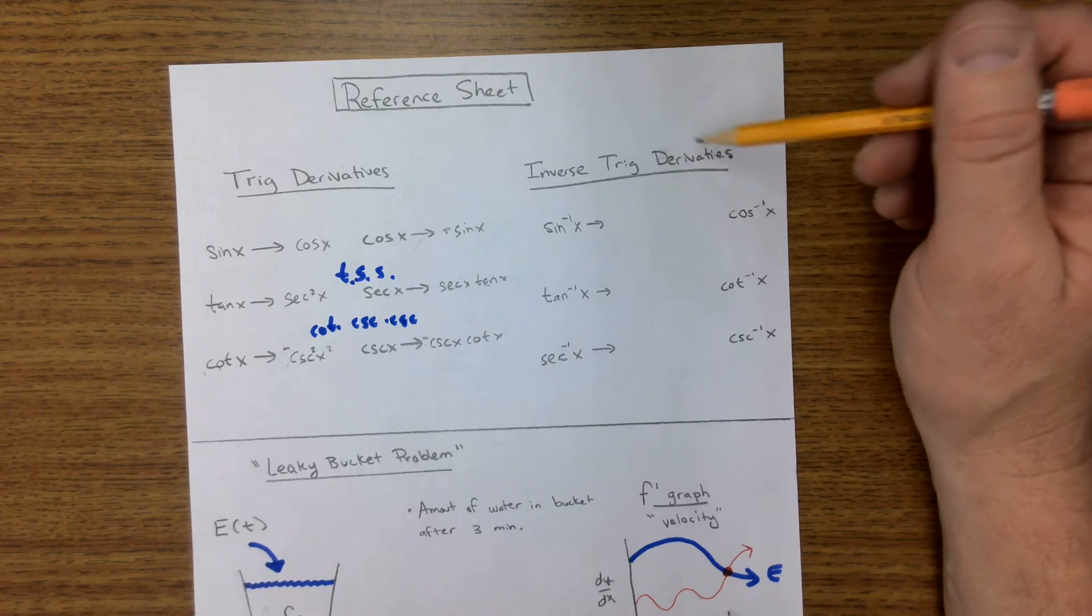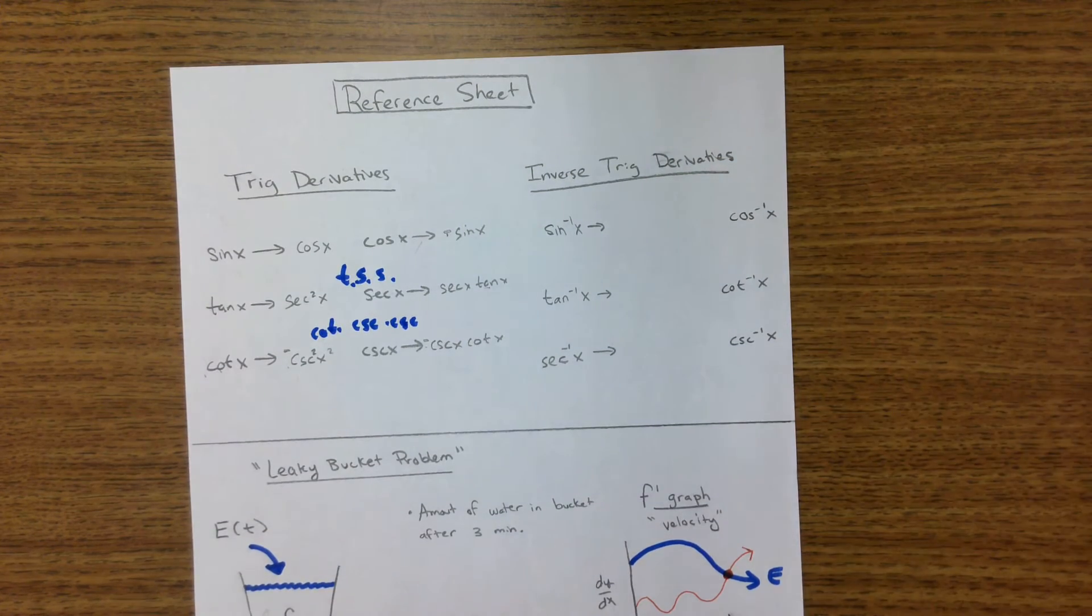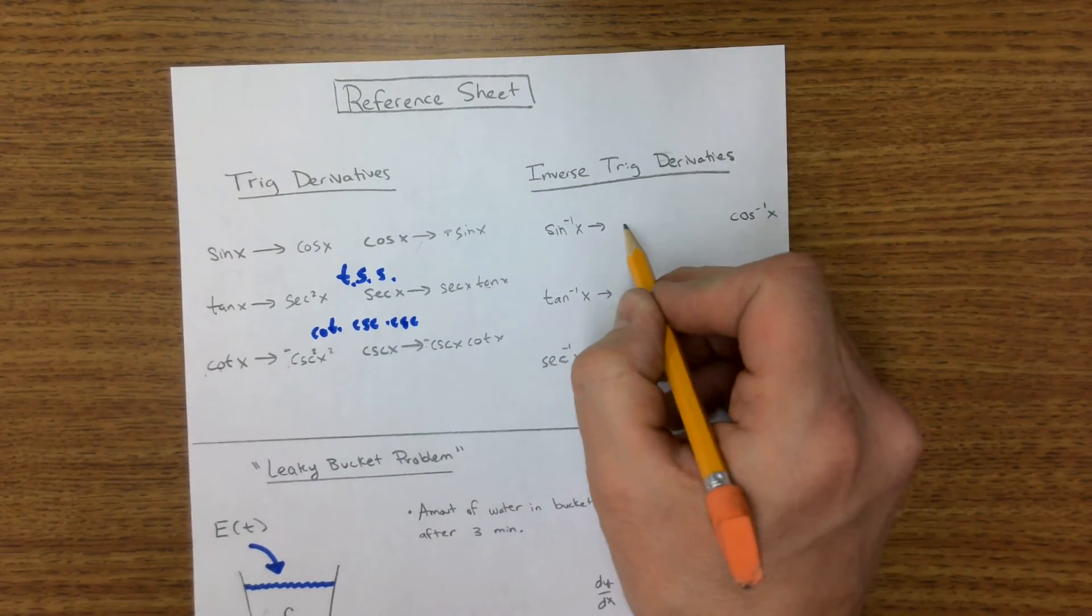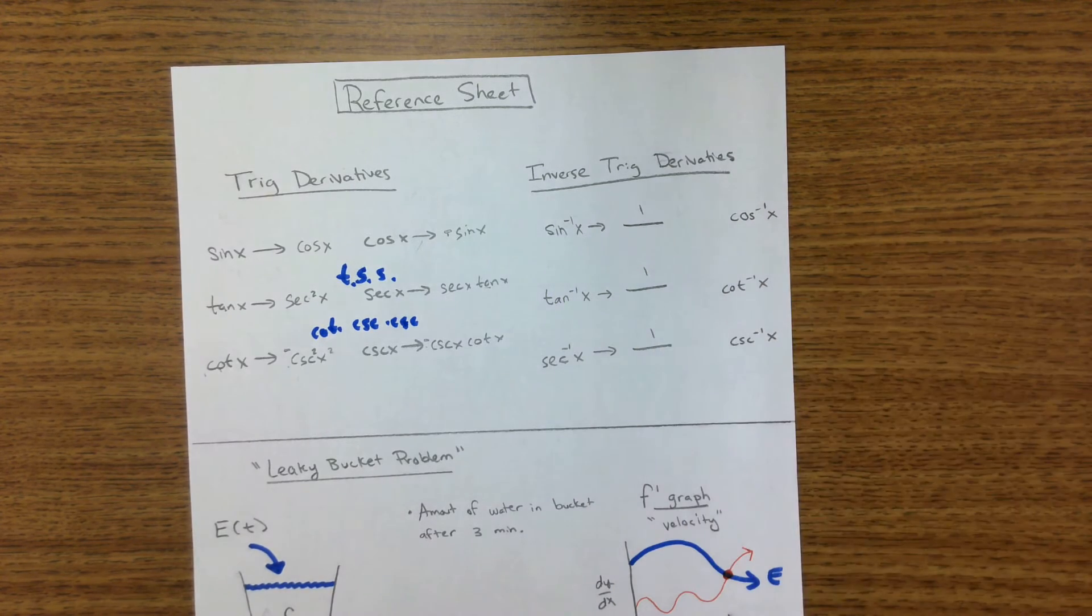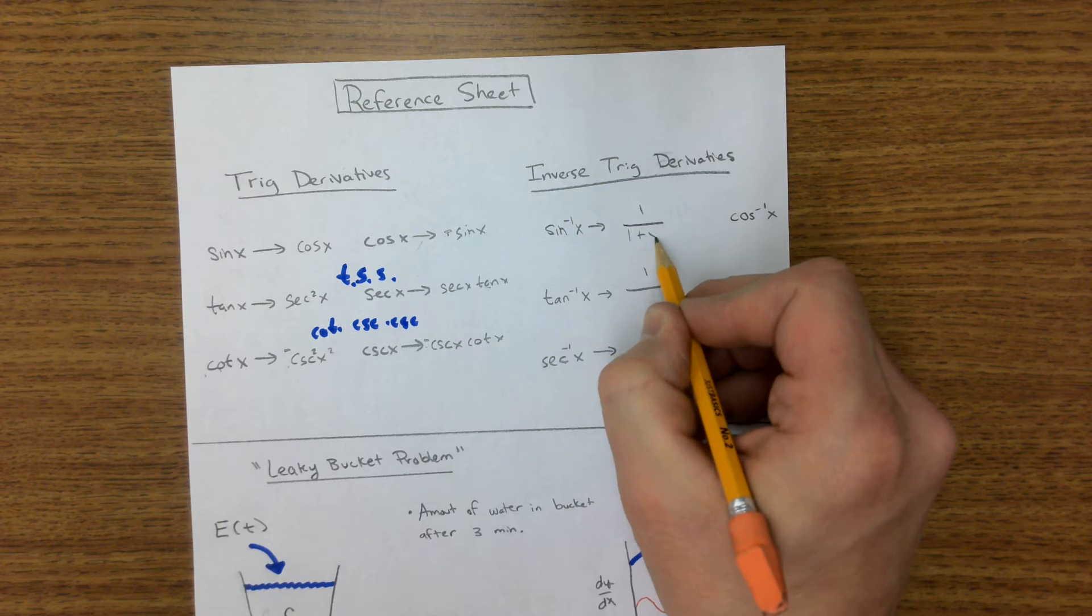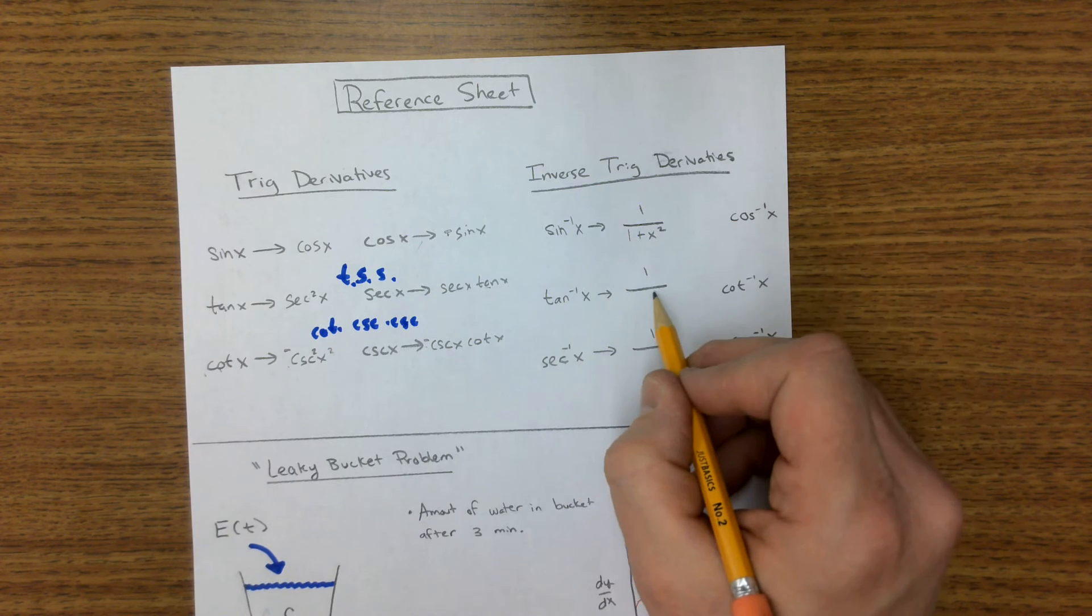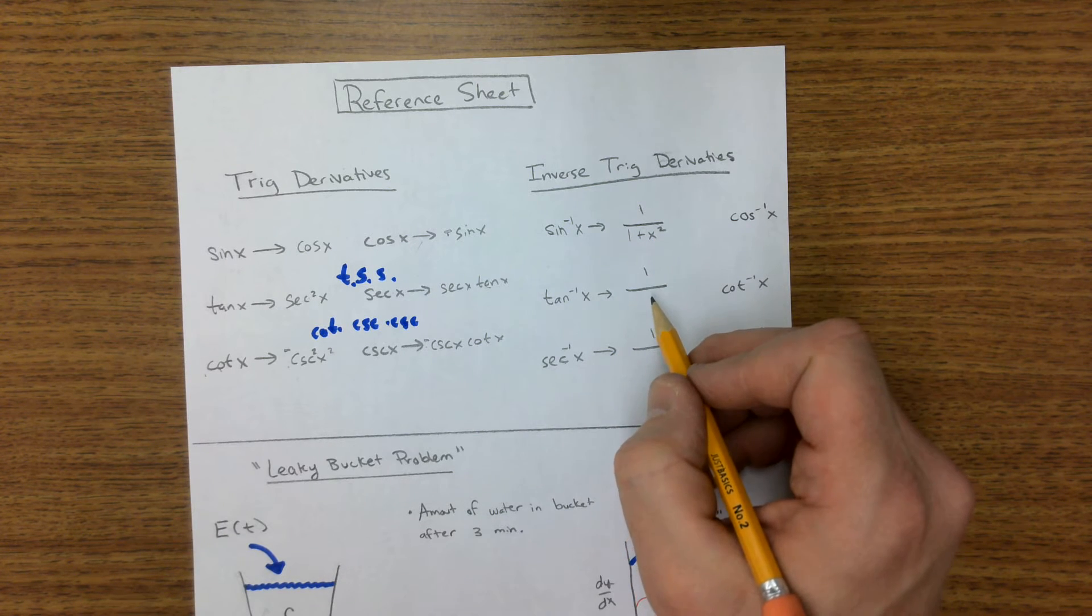Now, when we get to the trig derivative, the inverse derivatives, a little bit harder to remember, but there is a kind of a pattern to it. They're all fractions. They all have ones up here. And this one is one plus X squared.